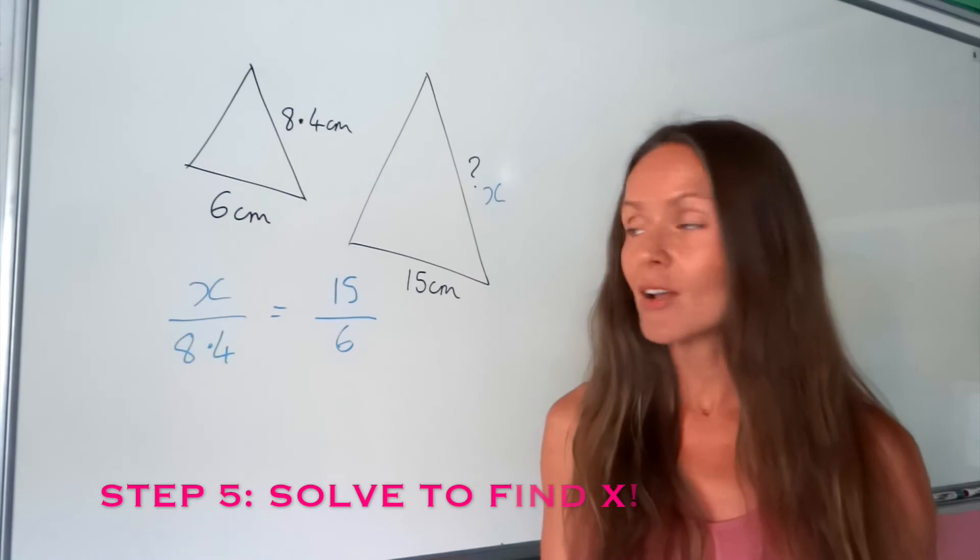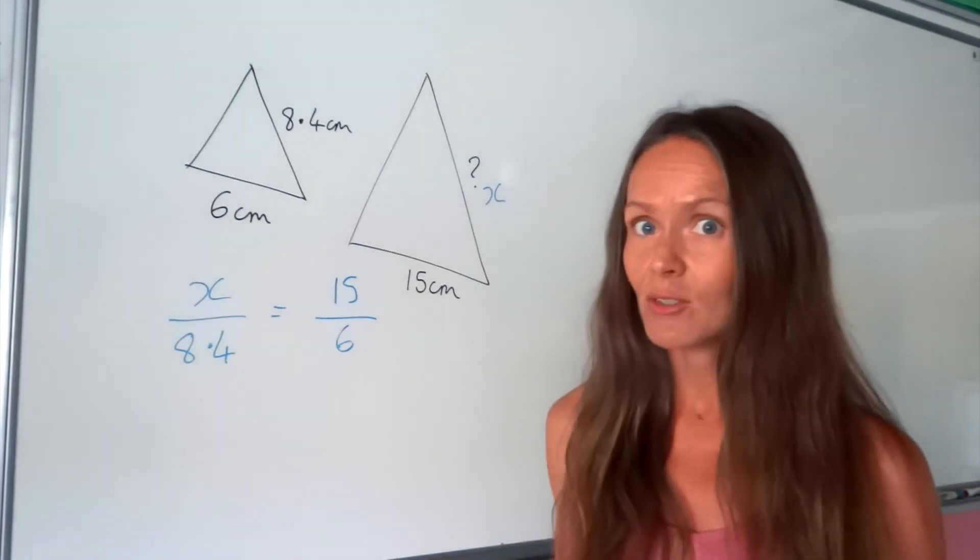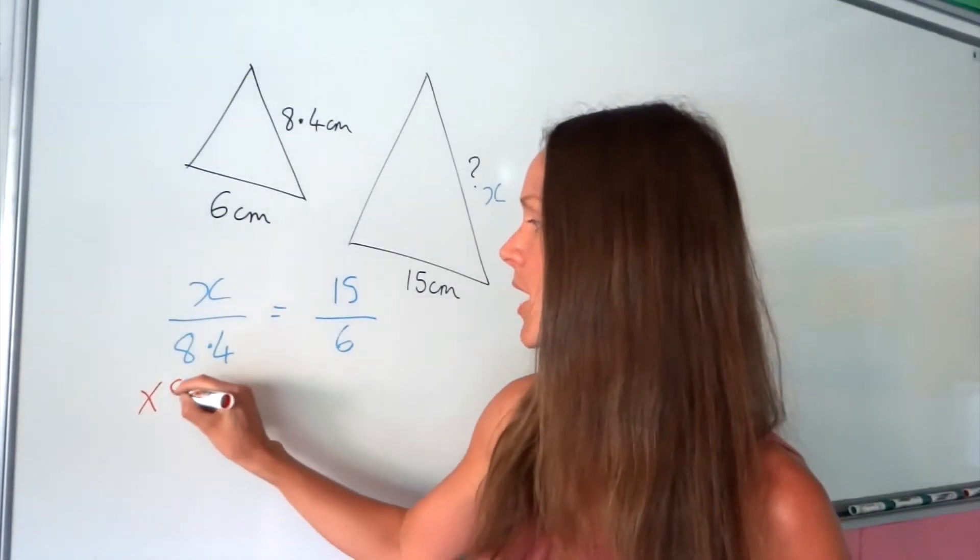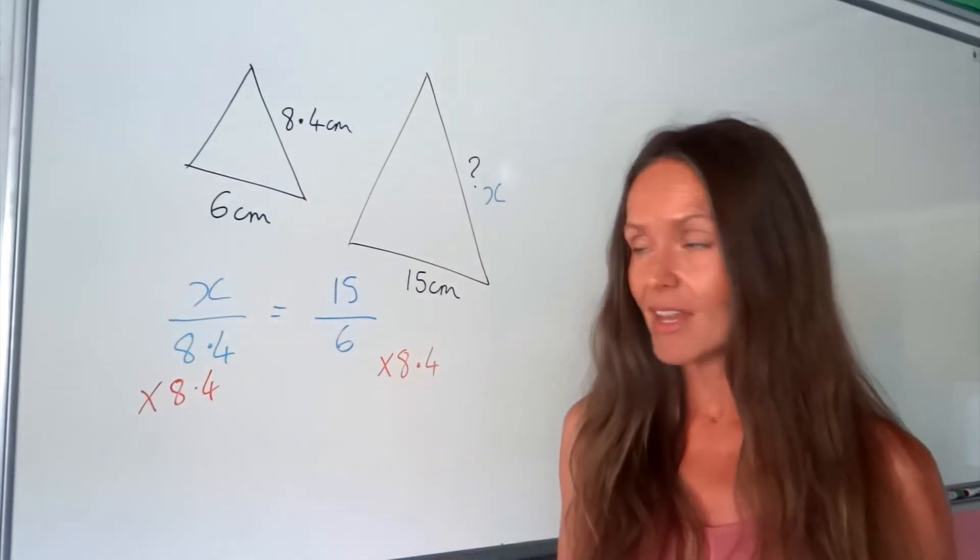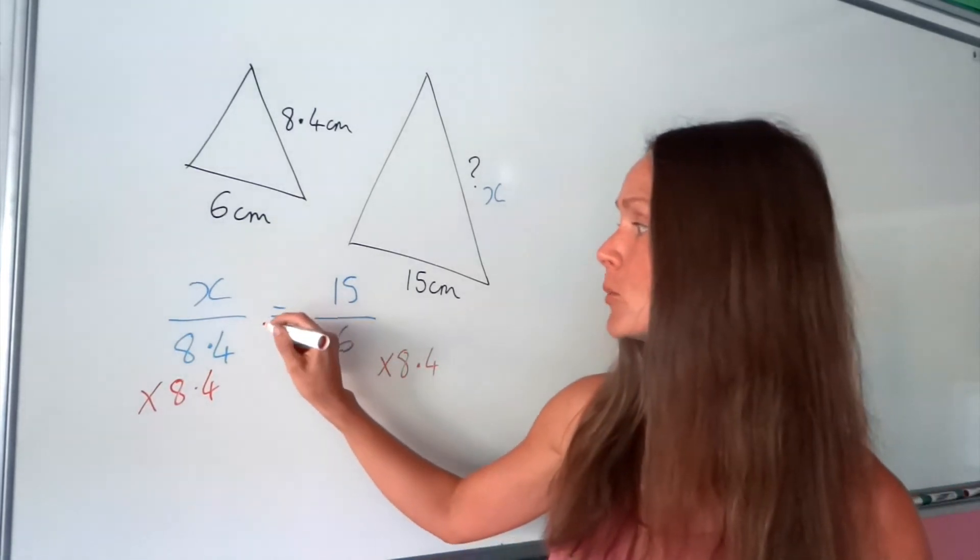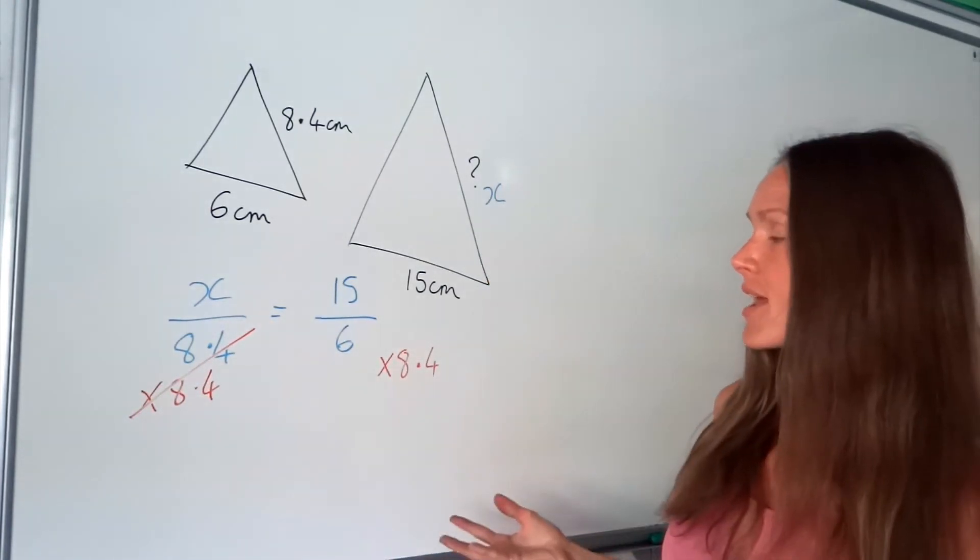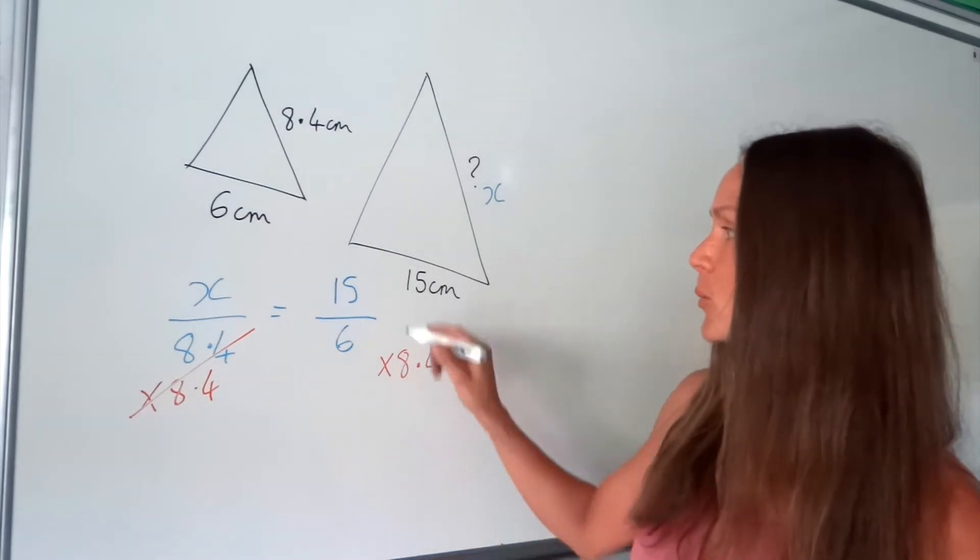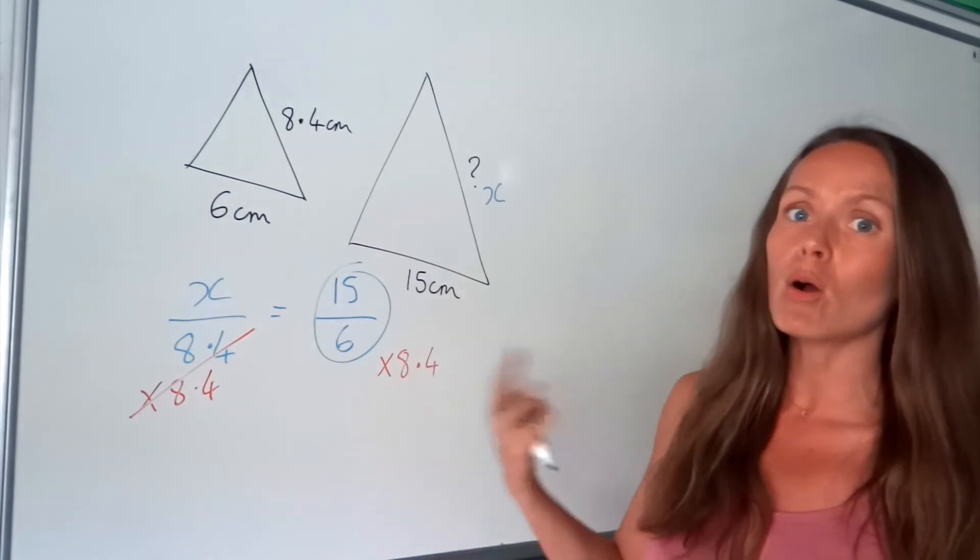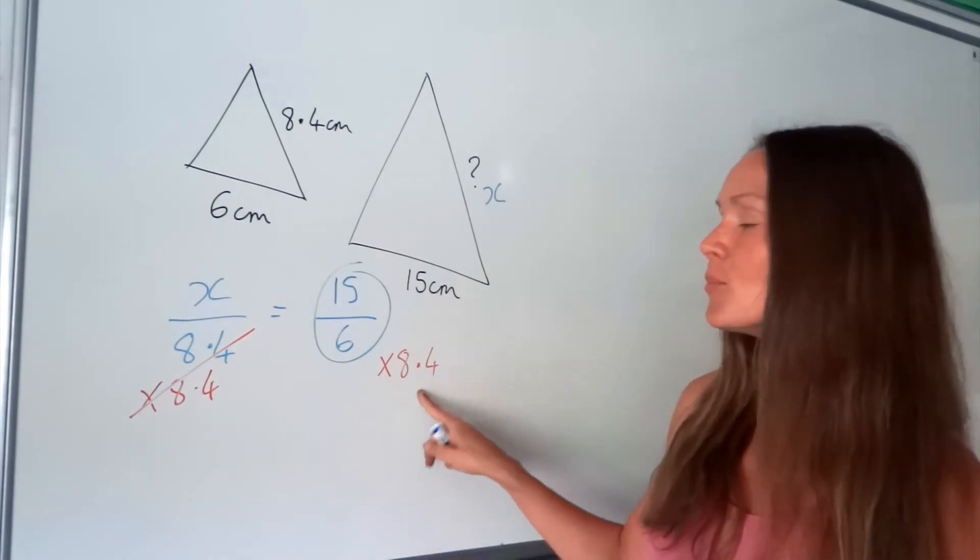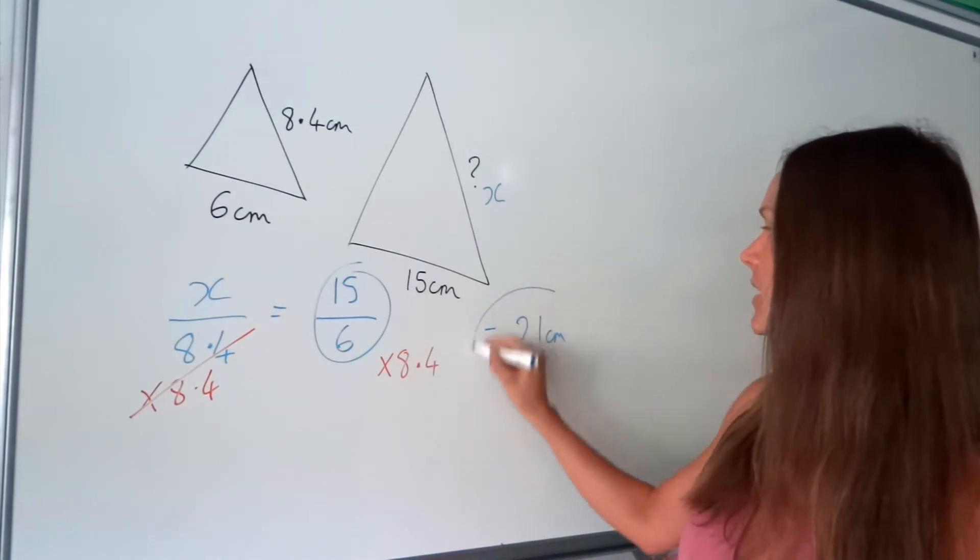And then we're just solving the equation. So because x is being divided by 8.4 we have to do the opposite. So we multiply by 8.4. Not forgetting to do the same thing on both sides of the equation. On the left hand side wherever we do the opposite it just cancels and we're left with x. And on the right hand side well you need to put that in the calculator. So put that fraction in the calculator or 15 divided by 6 and then multiply that answer by 8.4. And hopefully you'll get 21 centimeters.